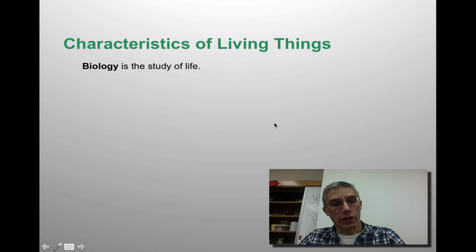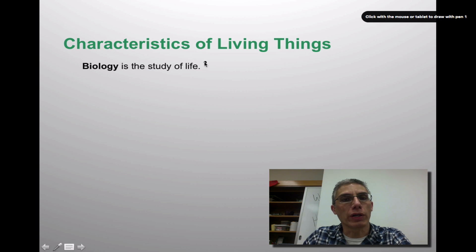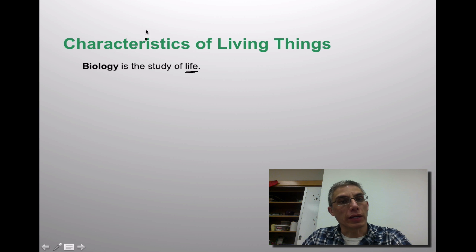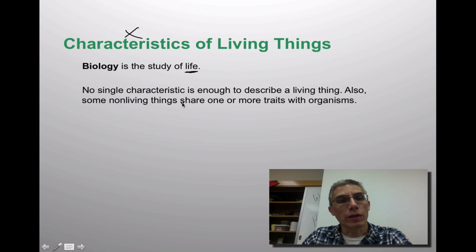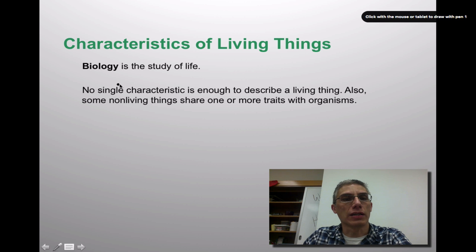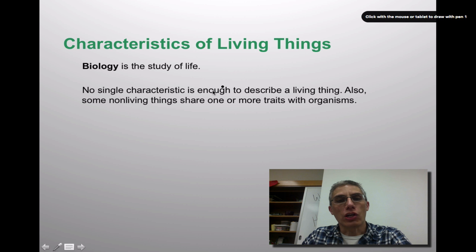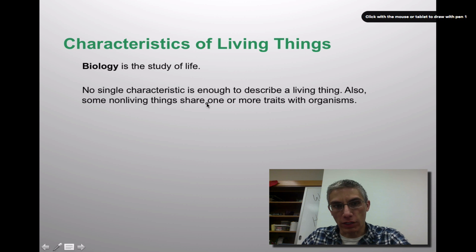The first thing we look at is a very basic definition of biology. Most of us would be able to do this without ever attending any biology class. The definition for biology is simply the study of life. But we need to look at characteristics that are going to allow us to define whether or not something we're looking at is considered living. No single characteristic is enough to describe a living thing — some non-living things can share one or more traits with organisms. You need to look at more than one thing.